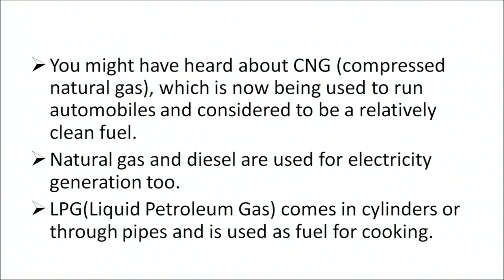Our human society is heavily dependent on petroleum and its products. They are used for running automobiles, steamers, and aeroplanes — petrol and diesel are refined petroleum products. Petroleum is also used for making plastics and fertilizers. CNG, that is compressed natural gas, is now being used to run automobiles and is considered a relatively clean fuel. Natural gas and diesel are used for electricity generation. LPG comes in cylinders or through pipes and is used as fuel for cooking. Energy is also harnessed from sun, wind, animal excreta, sea, and radioactive minerals.